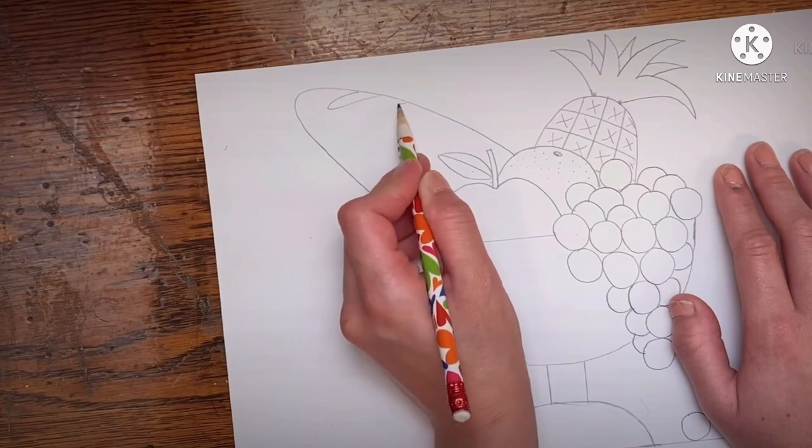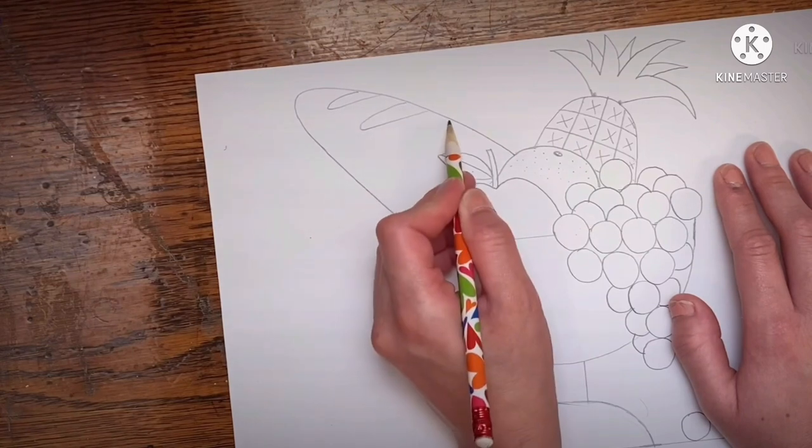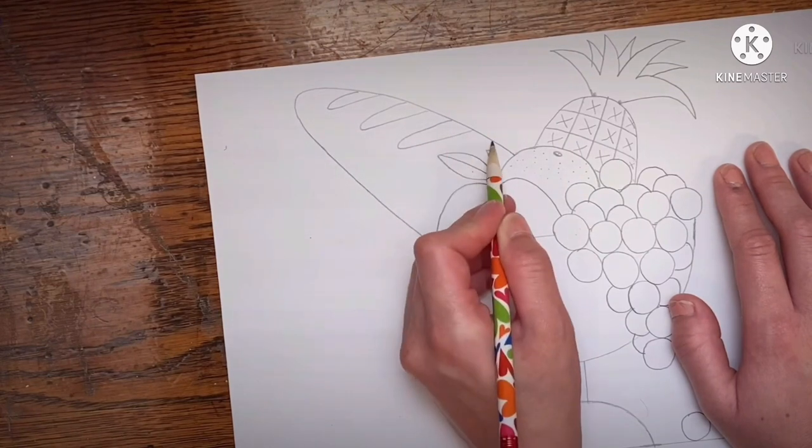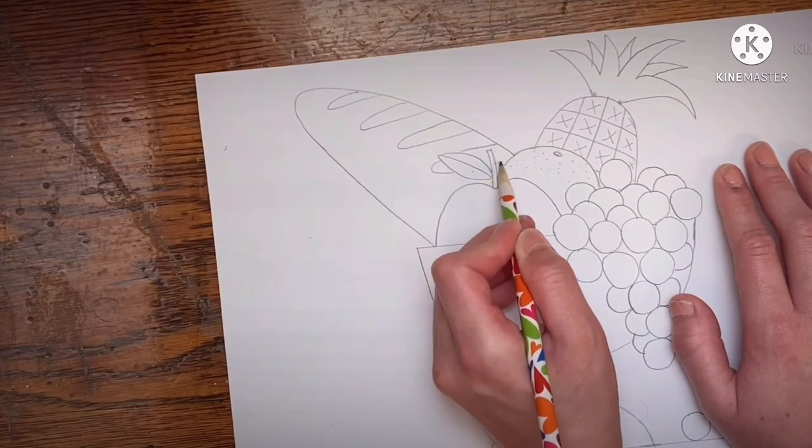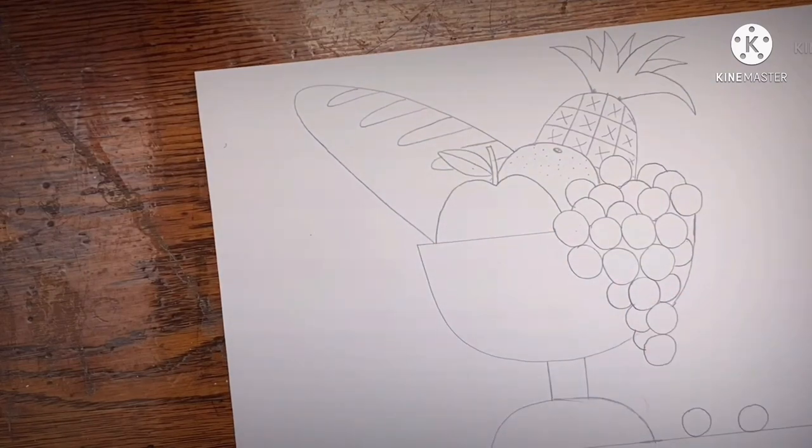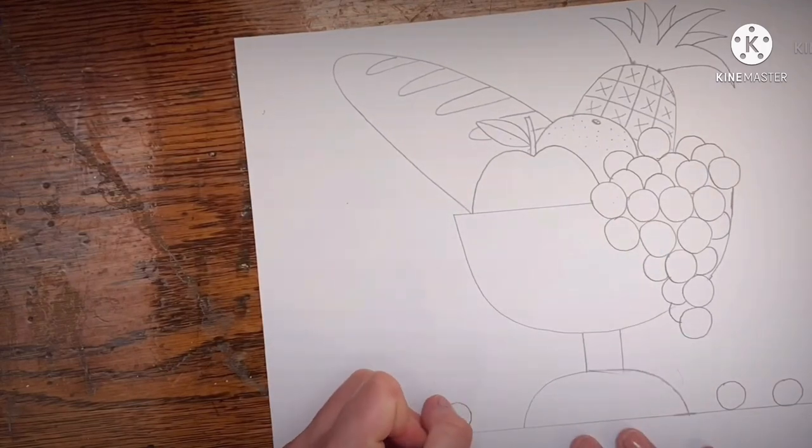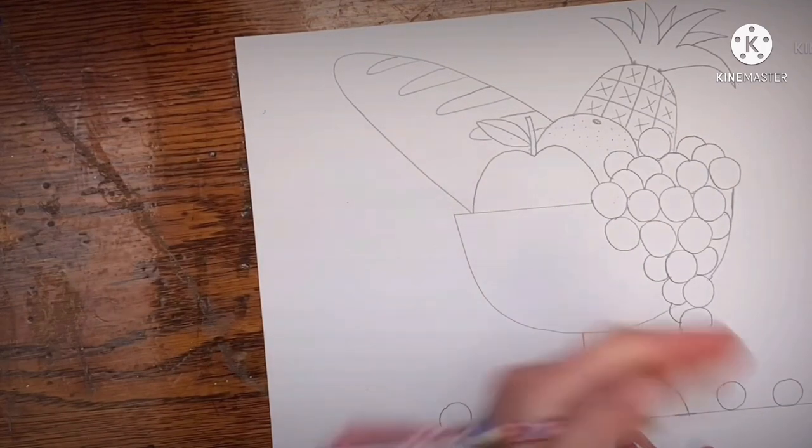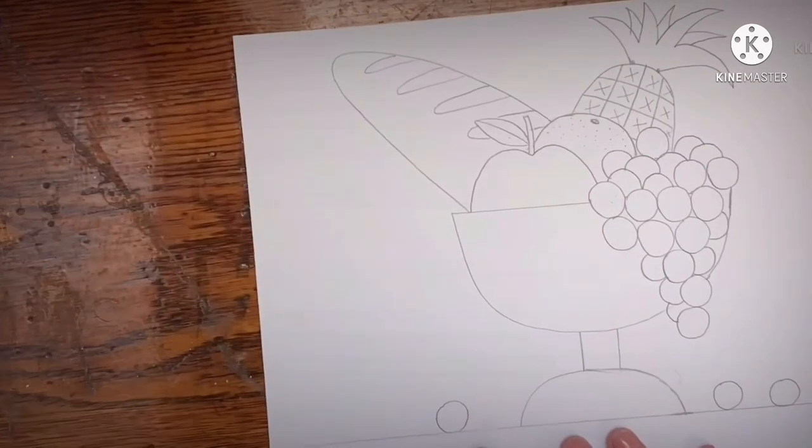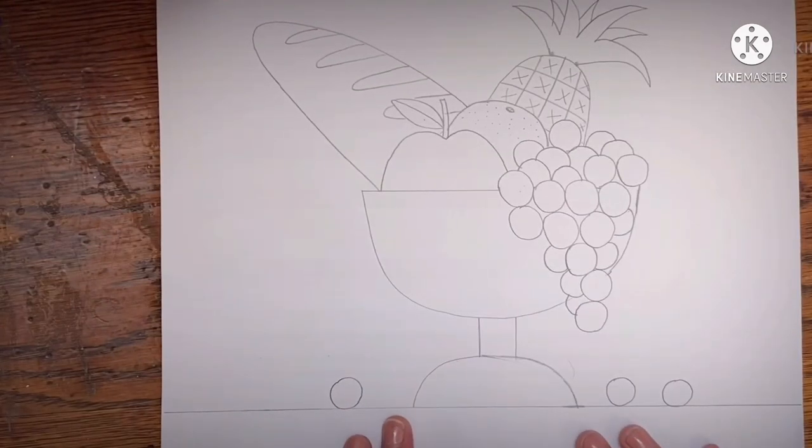Some of those lines going behind the leaf and the stem of my apple. There we go. Just for fun, I'm going to draw another grape over here. Now we have finished our fruit bowls.